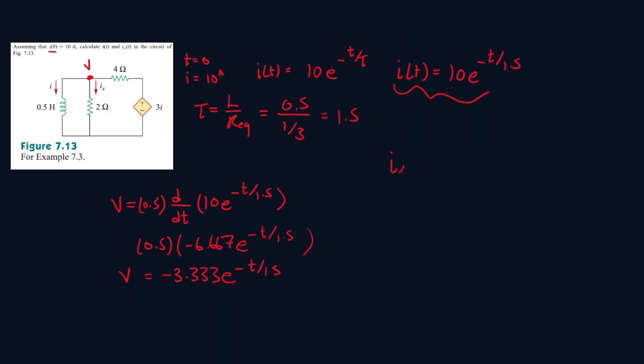Now, to find Ix, it will be equal to V over 2. So it will be minus 3.333 E minus T over 1.5 all over 2, which gives me minus 1.6667 E minus T over 1.5. And that's your answer for Ix. Thank you.